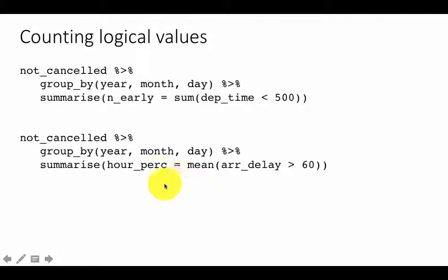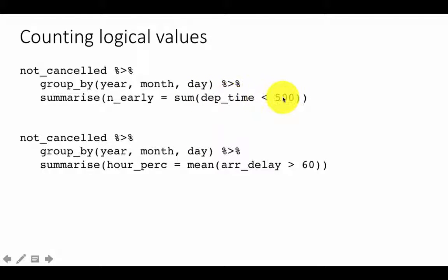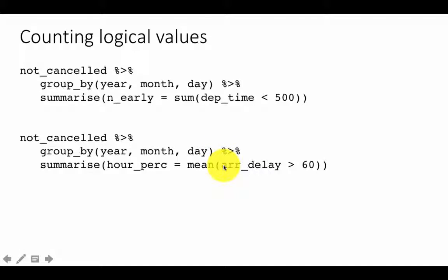Similarly, you can find what proportion of flights had an arrival delay of more than one hour. Instead of summing the boolean values, take the mean of the boolean values — TRUE is treated as one and FALSE as zero — so the average gives you the proportion directly. This lets you compute what percentage of flights were delayed by more than one hour.